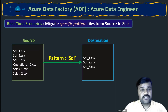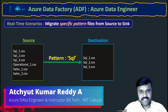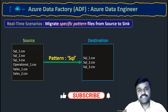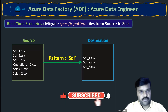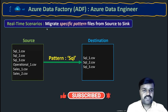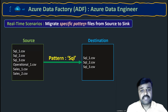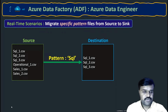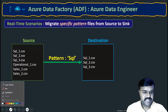Hello all, welcome to the course Azure Data Factory in Azure Data Engineering. In this lecture, let us try to understand one real-time scenario which we are going to see very frequently in projects. The scenario is: migrate specific pattern files from source to destination location.